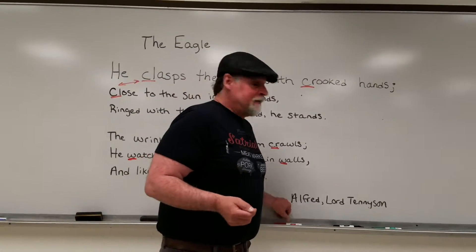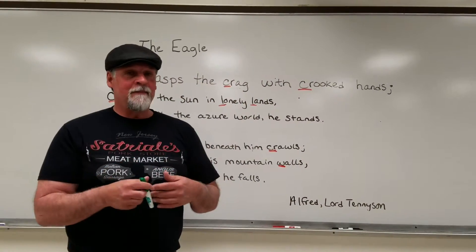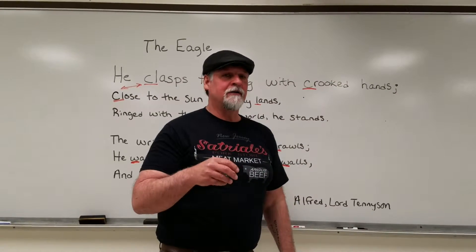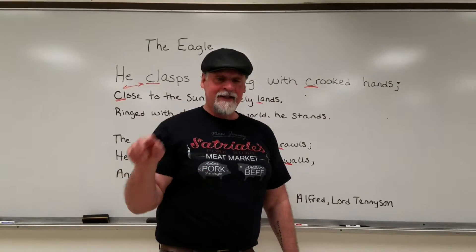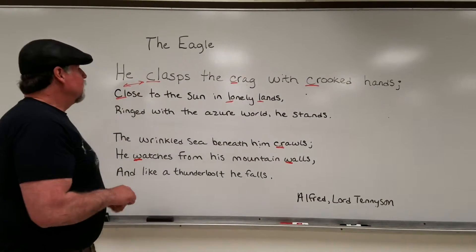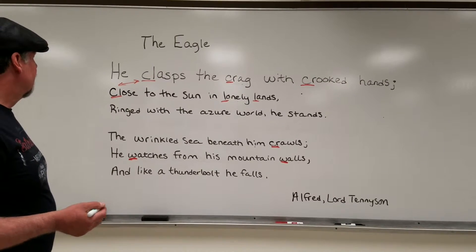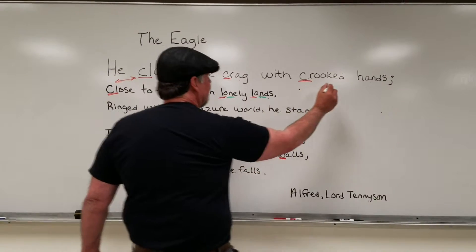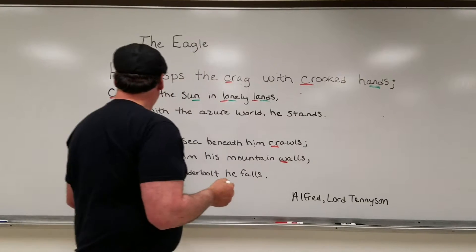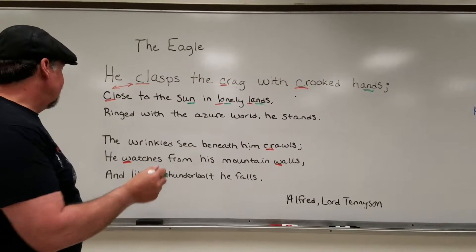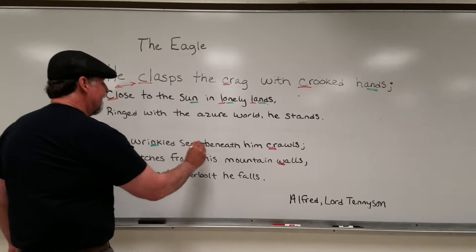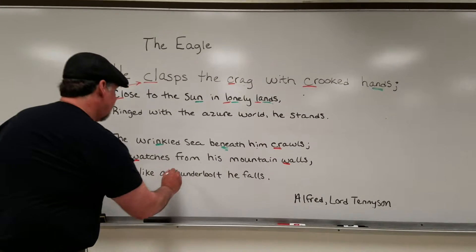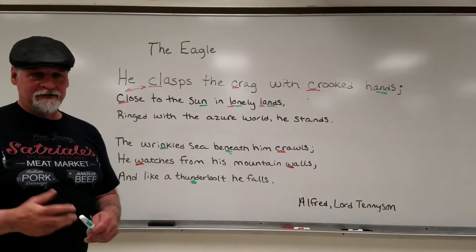The next device is consonance. The difference between consonance and alliteration is that rather than appearing at the beginning of a word or at the first syllable, consonance occurs as a repetition of a consonant sound at the end of a word or in the middle of a word. So what do we have? 'Hands,' 'sun,' 'man,' 'lonely' — that's the first case. 'Ringed with the azure world he stands,' 'wrinkled' — we have the N sound again. 'Watching from his mountain walls,' 'And like a thunderbolt he falls.' So we have a repetition of N sounds throughout the poem.